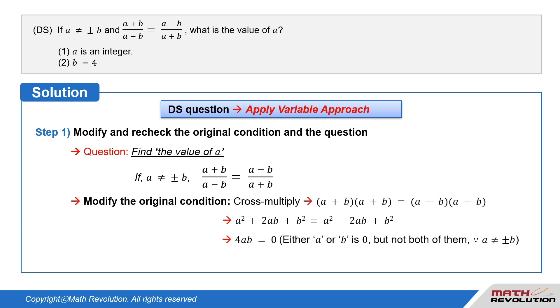And then we get a plus b times a plus b equals a minus b times a minus b. Foiling out the brackets gives us a squared plus 2ab plus b squared equals a squared minus 2ab plus b squared, which simplifies to 4ab, which equals 0.